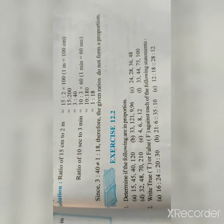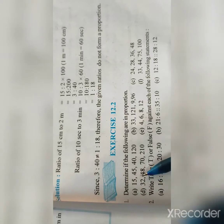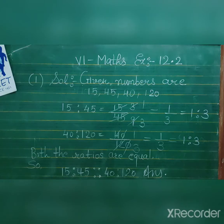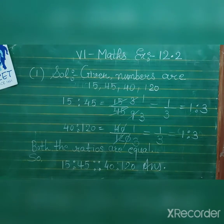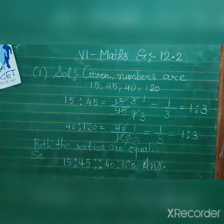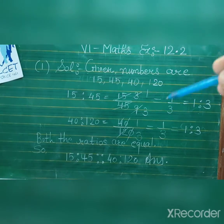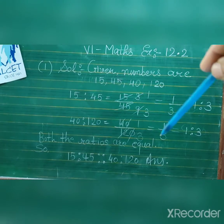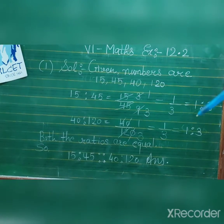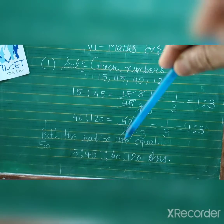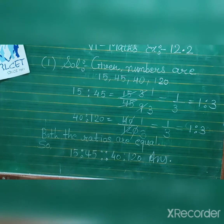Exercise 12.2: Determine if the following are in proportion. Given numbers: 15, 45, 40, 120. Now 15 is to 45 simplifies to 1 is to 3. And 40 upon 120 canceling the zero gives 4 upon 12, which is 1 is to 3. Both ratios are equal, so 15 is to 45 is in proportion with 40 is to 120.